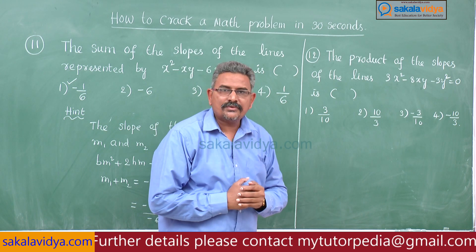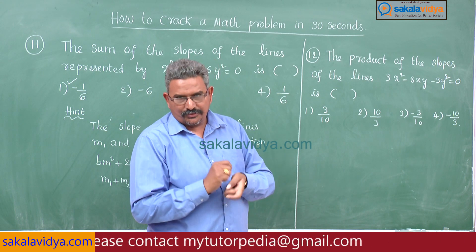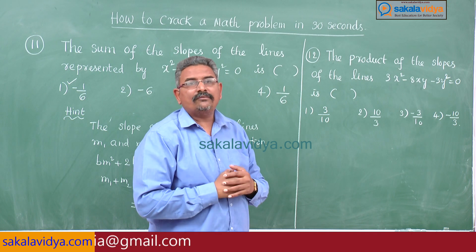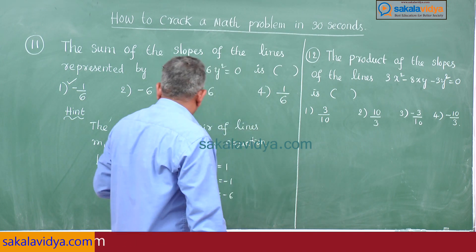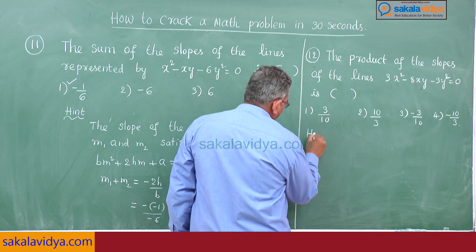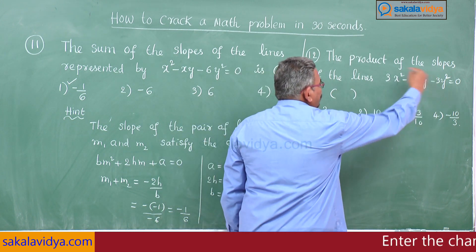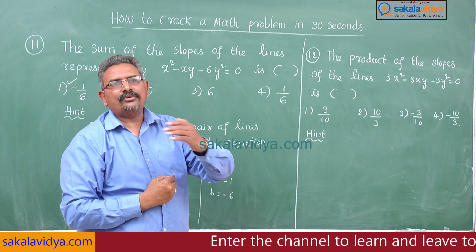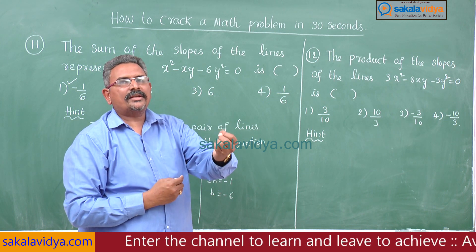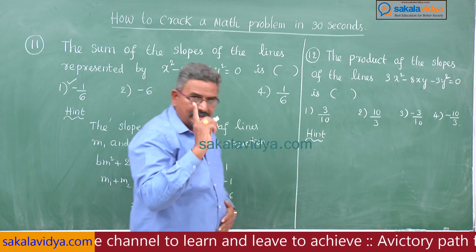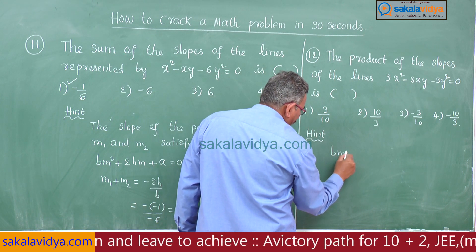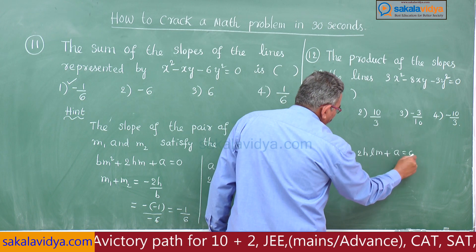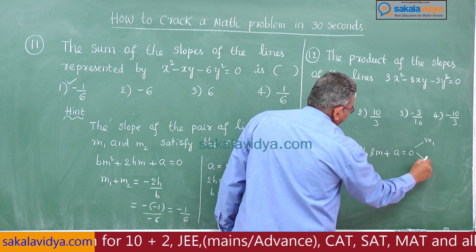In the previous problem we found the sum of slopes m₁ + m₂, but here the keyword is 'product of the slopes', meaning we need m₁ × m₂. The equation 3x² - 8xy - 3y² = 0 represents two lines through the origin: y = m₁x and y = m₂x. Their slopes m₁ and m₂ satisfy bm² + 2hm + a = 0, which has two roots m₁ and m₂.